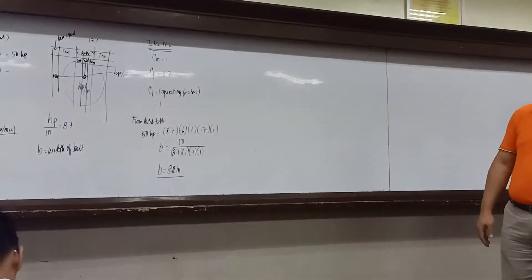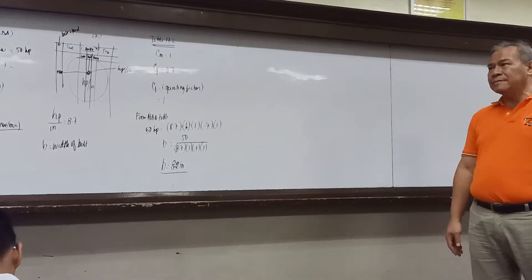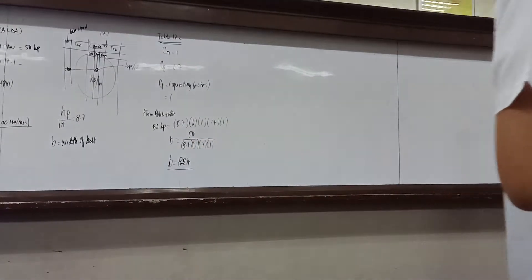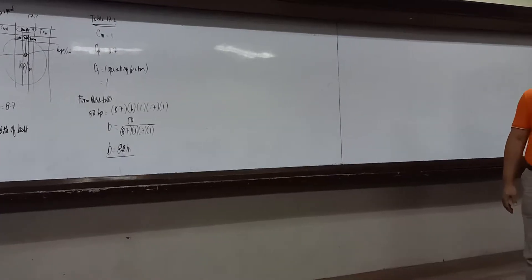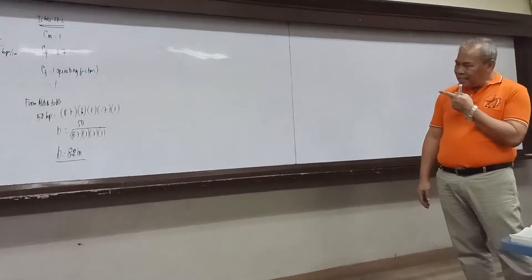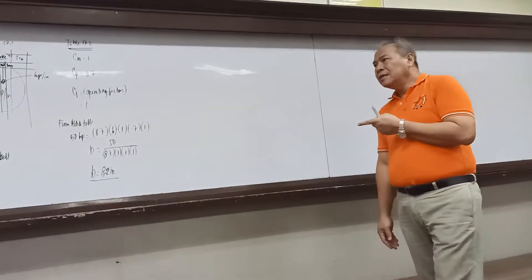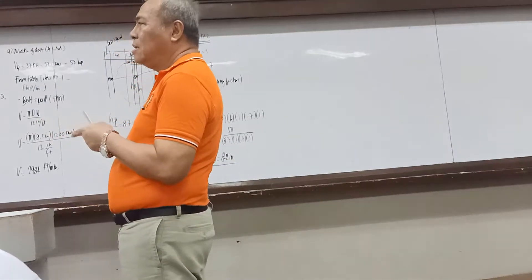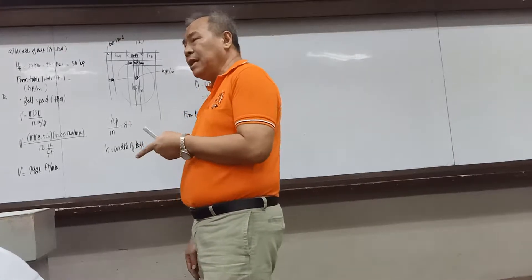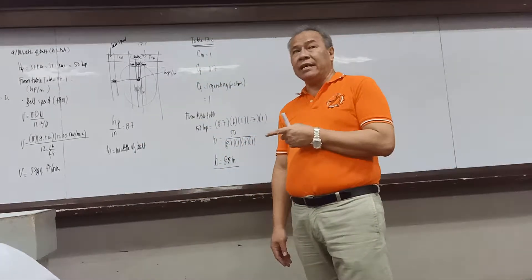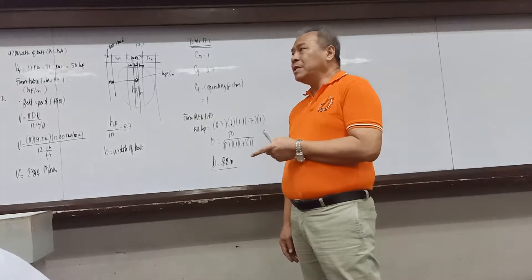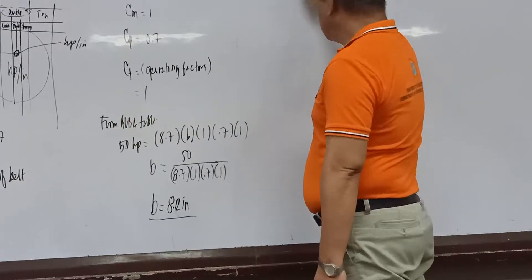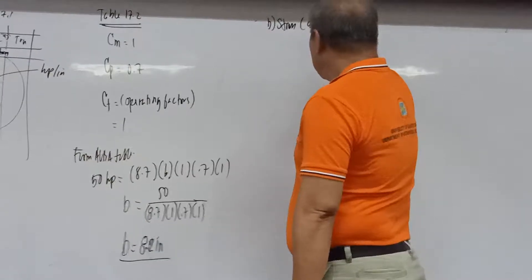For the belt density, since we are using a leather belt, the recommended value from the textbook is 0.035 pounds per cubic inch. For rubber belts, the density is approximately 0.045 pounds per cubic inch. Take note — the unit is pounds per cubic inch, not cubic foot.